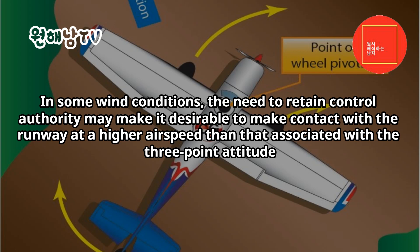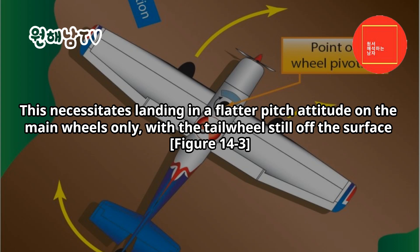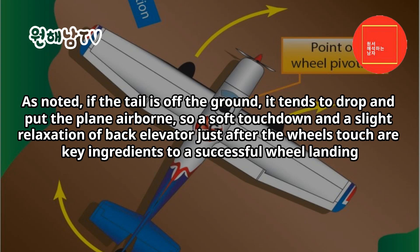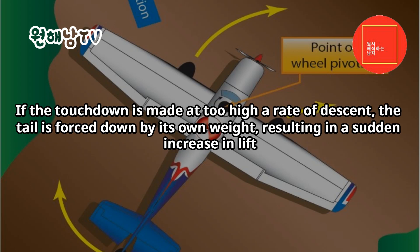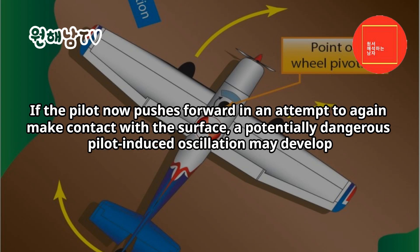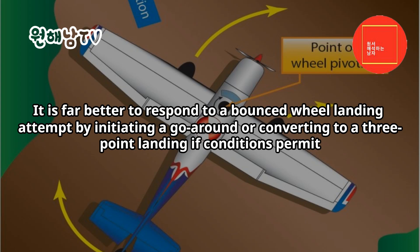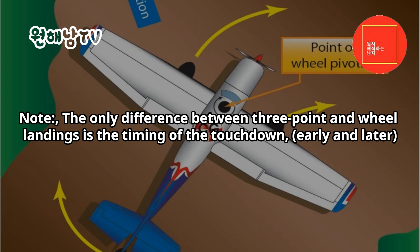Wheel landing: in some wind conditions, the need to retain control authority may make it desirable to contact the runway at a higher airspeed than the three-point attitude, landing in a flatter pitch attitude on the main wheels only with the tailwheel still off the surface. Since the tail tends to drop and put the plane airborne, a soft touchdown and a slight relaxation of back elevator just after the wheels touch are key ingredients. If the touchdown is made at too high a rate of descent, the tail is forced down by its own weight causing a sudden increase in lift. If the pilot pushes forward in an attempt to regain contact, a potentially dangerous pilot-induced oscillation may develop. It is far better to respond to a bounced wheel landing by initiating a go-around or converting to a three-point landing if conditions permit.